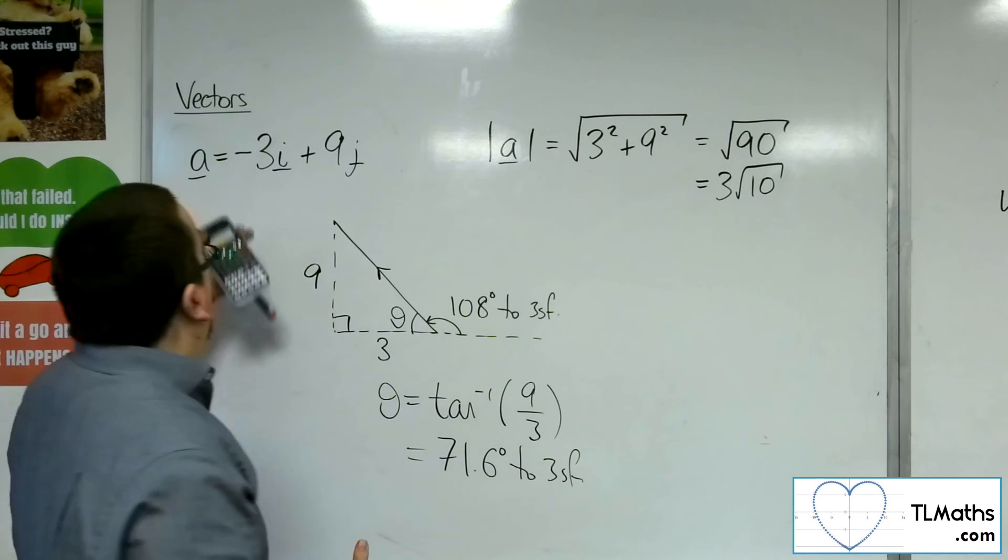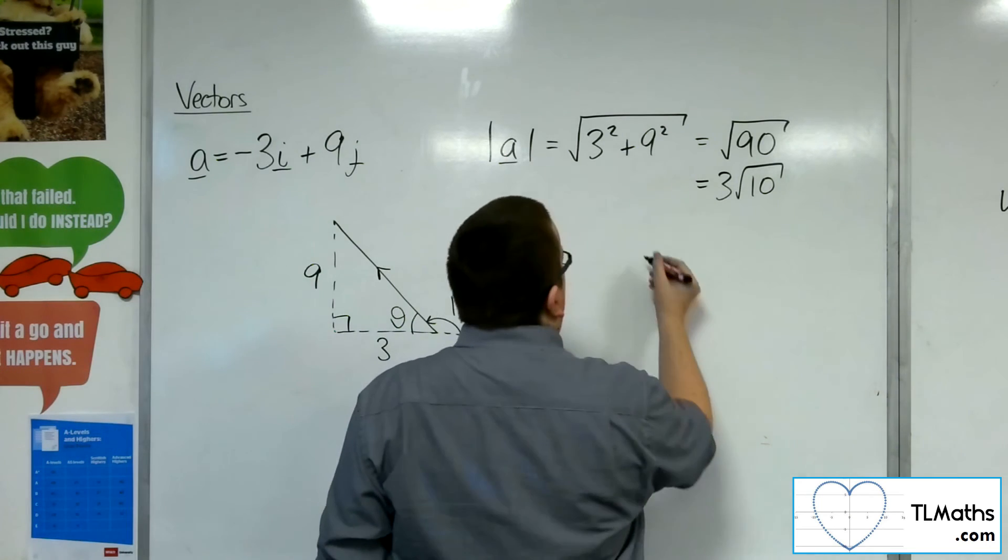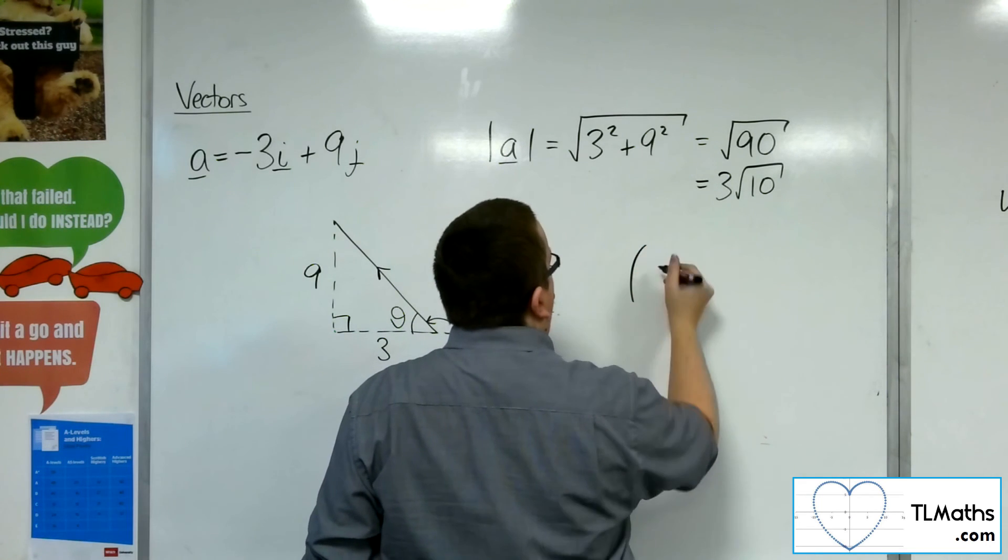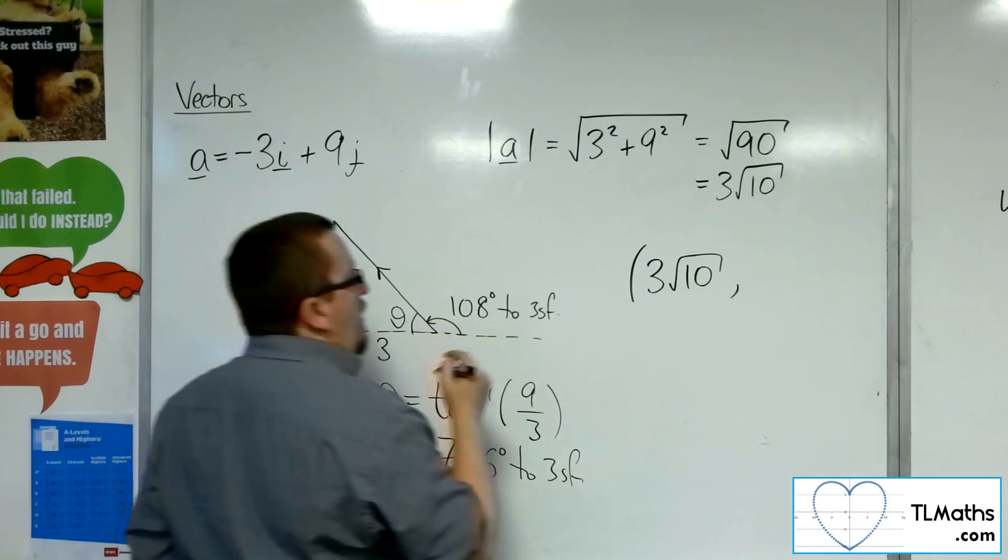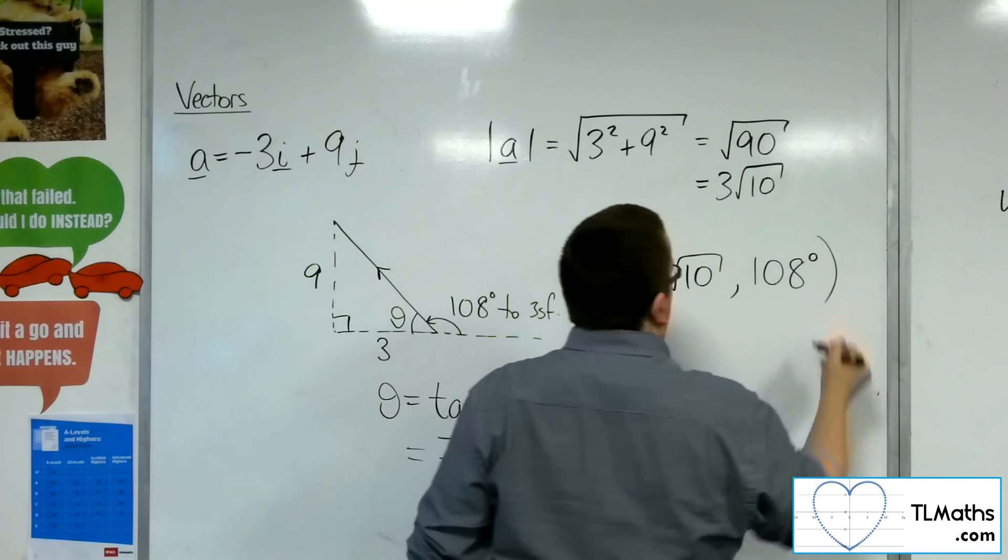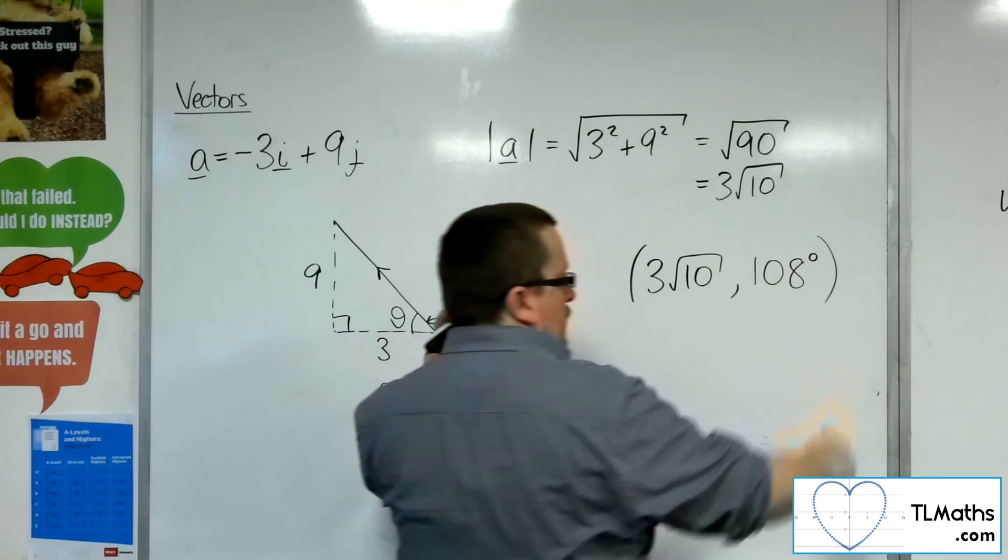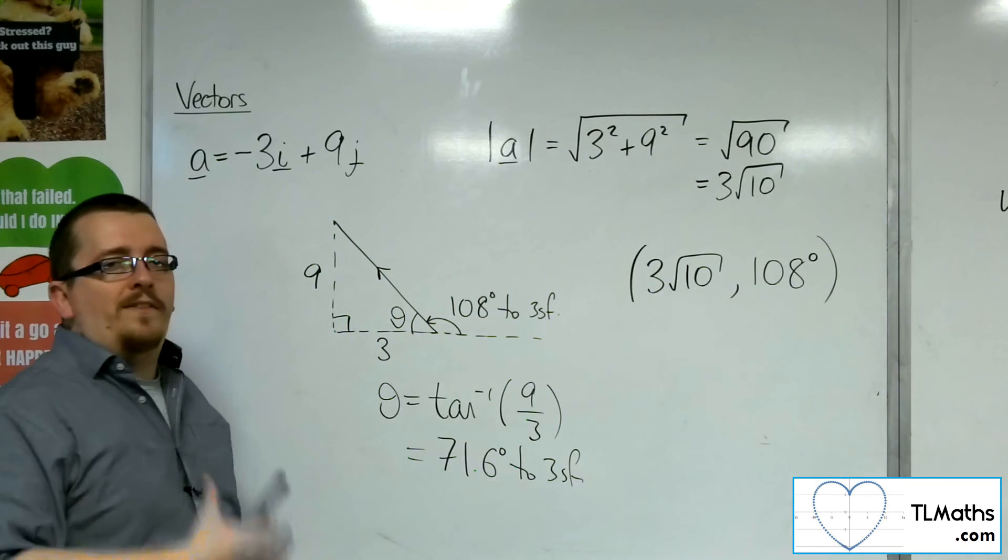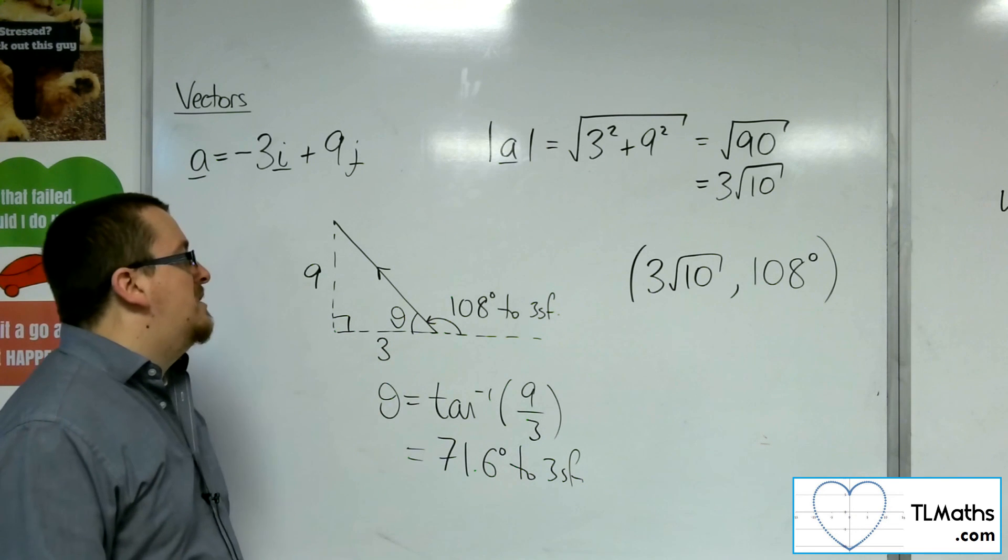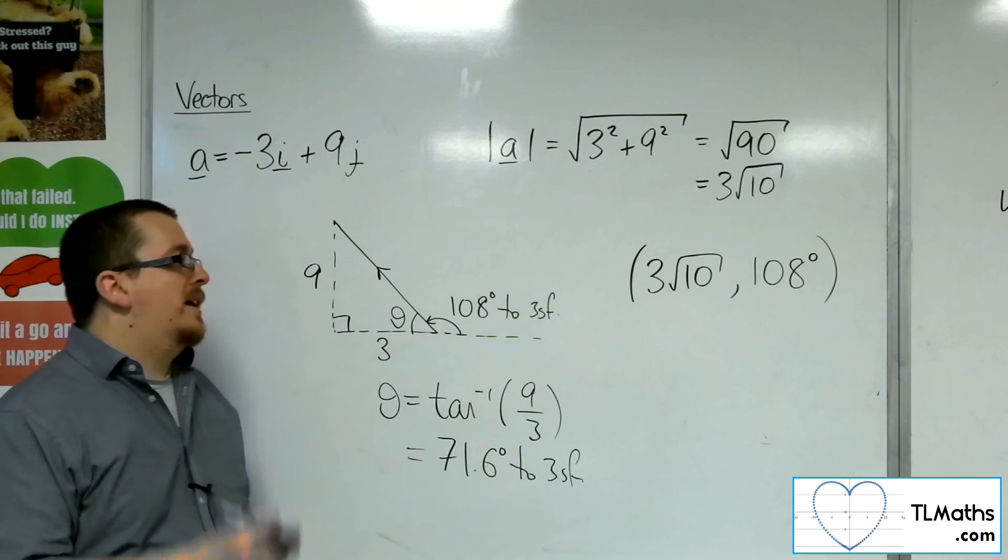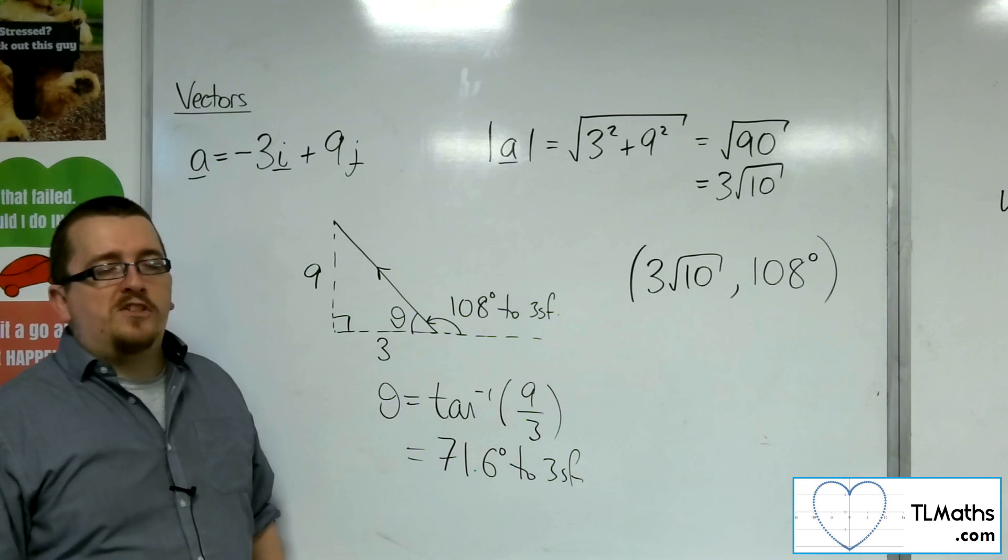So if I was to write this vector in magnitude direction form, it's often written in a bracket where the magnitude is given first and the direction is given second. Like so. So you must have the degrees symbol in there, OK, in order to identify that that is the angle that we are using here. The diagram backs it up to make sure that you are clear to the examiner which angle you've chosen to use, if it hasn't already been specified.